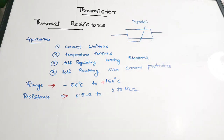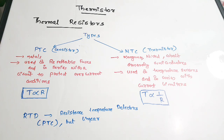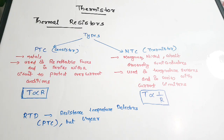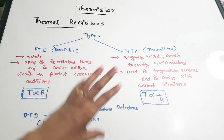Next we are going to see the various types of thermistors, shapes, structures, and also some important questions connected to this topic. The resistance of a thermistor depends on temperature, and based on whether resistance is dropping or increasing with temperature, thermistors can be classified into two categories.